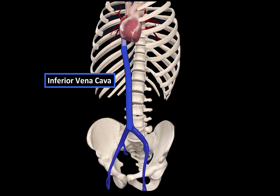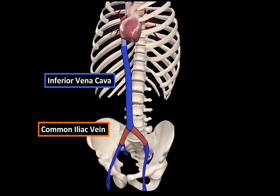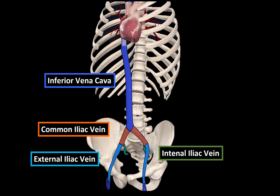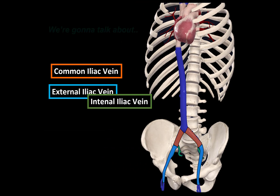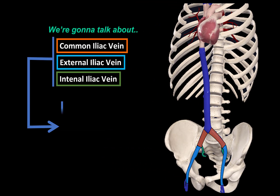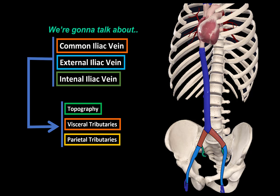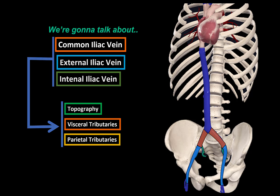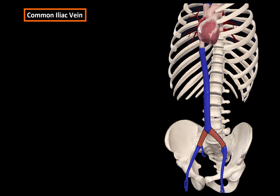Now that we're done with the inferior vena cava, let's go ahead and cover the anatomy of the common, external, and internal iliac veins. We're going to do that by breaking down their topography, the visceral tributaries, and the parietal tributaries. So let's start with the common iliac vein.